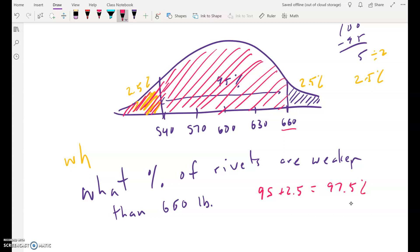Or I can do 100% minus the rivets that are stronger than 660, which also gives you 97.5%.